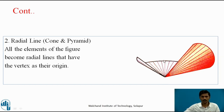If you see that one side of all the elements has the vertex as their origin, and these elements are radiating from the origin, that is the center. So that figure is called the development of the cone. Similarly, we can have the development of the pyramid also in the same fashion.